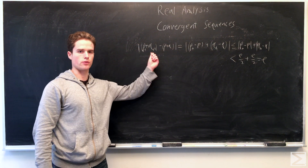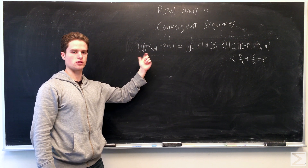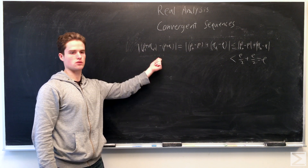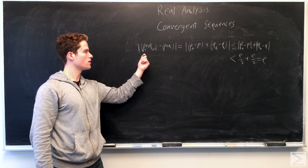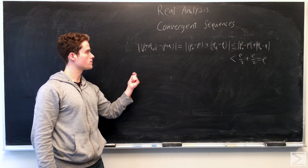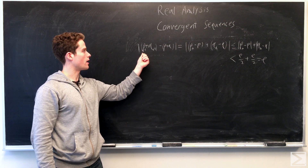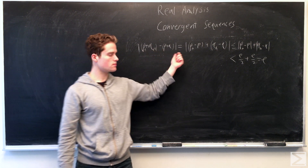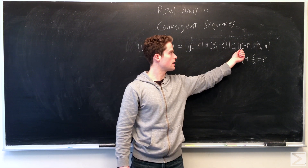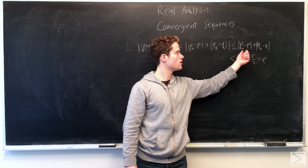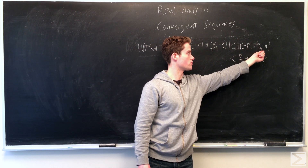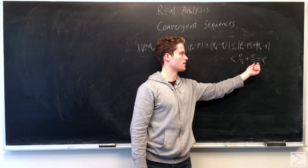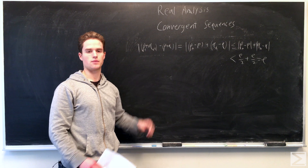One important thing to note: working with real numbers, the distance is just the absolute value of the difference between two numbers. So to prove a sequence converges to a real number, we show the absolute value of p_n minus p gets as small as we want. For the first part, we show that |p_n + q_n − (p + q)| gets as small as we want. Rearranging and using the triangle inequality, this is less than or equal to |p_n − p| + |q_n − q|. Since p_n converges to p and q_n converges to q, we can find N such that little n greater than N implies both terms are less than ε over 2, so the whole expression is less than ε.